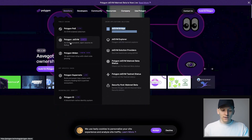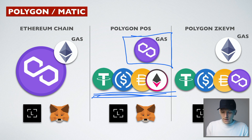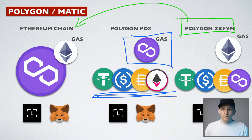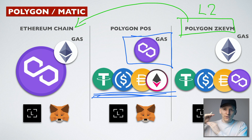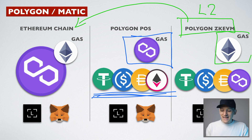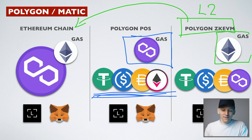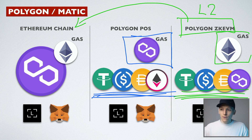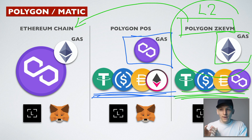We also have a new chain: Polygon ZKEVM. The Polygon ZKEVM is a layer two network on top of Ethereum, while Polygon Proof of Stake is a side chain — it's different. Polygon ZKEVM settles directly to Ethereum. The key difference is it pays ETH for gas. So if you want to use the Polygon ZKEVM, you need to bridge over some Ethereum to pay for gas fees. You can use MetaMask just the same, and if you have a Ledger or Trezor linked up to MetaMask, those should work normally as well.